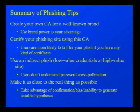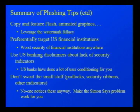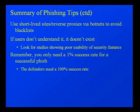A summary of phishing tips: create your own CA for a well-known brand — people will recognize it more than any major CA. Take advantage of the fact that people trust a site with a certificate. Indirect phishing isn't necessary yet because direct phishing is still too easy. Make the site as close as possible to the real thing — confirmation bias works in your favor. Leverage the watermark fallacy: copy flash and fancy animated graphics in as much detail as possible. Target US financial institutions — they're your best friend if you're a phisher. Copy the US banking disclaimers. Don't worry about security indicators — enough people simply won't notice them. Use short-lived sites and reverse proxies. And finally: you only need a 1% success rate; the defenders need about 100%, which they're nowhere near achieving.